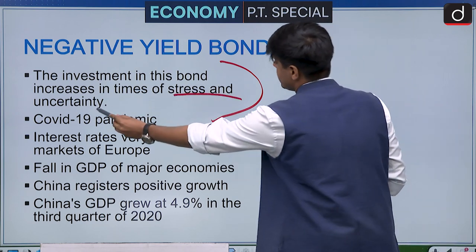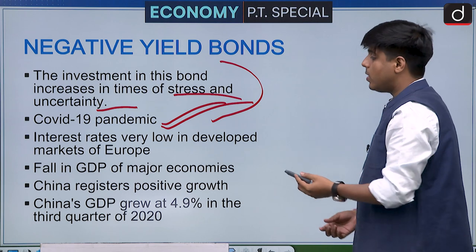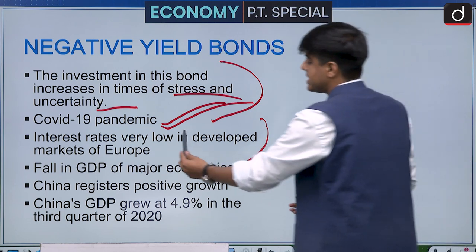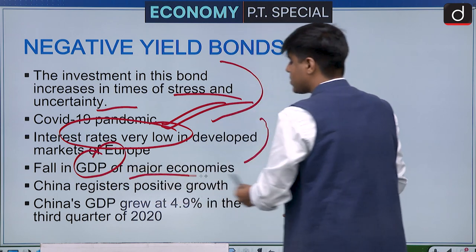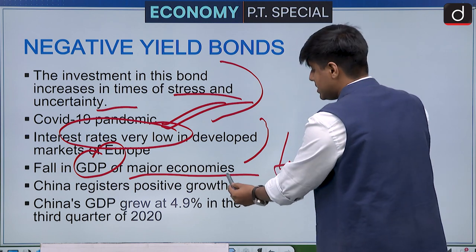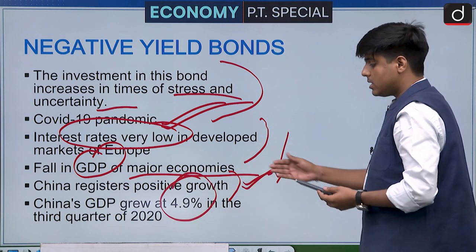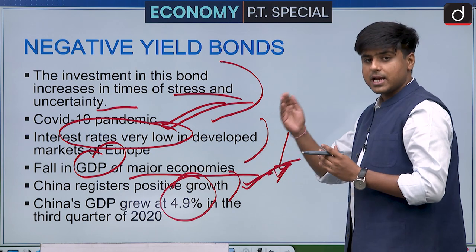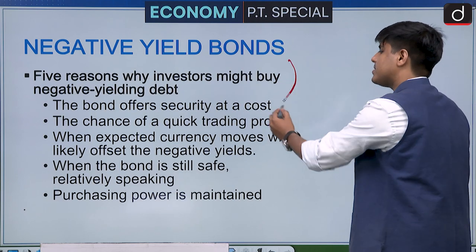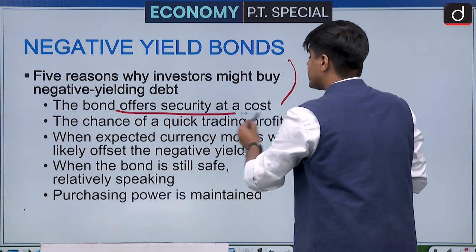Investment in negative yield bonds increases during times of stress and uncertainty — exactly the situation during COVID-19. In Europe and most of the developed world, interest rates are already very low and GDP has plummeted due to the pandemic. Meanwhile, China registered positive growth of 4.9 percent GDP in the third quarter of 2020 — low by China's standards but respectable given global conditions.